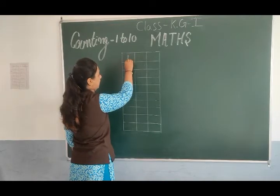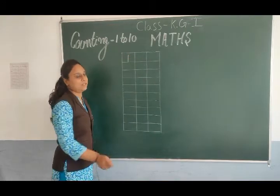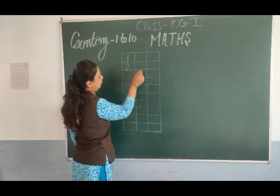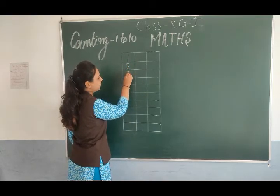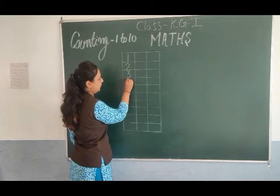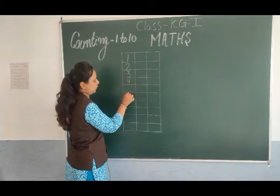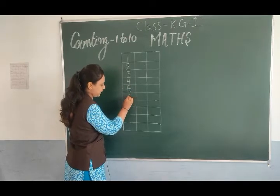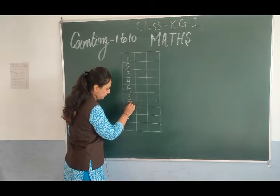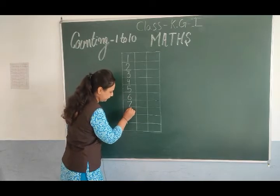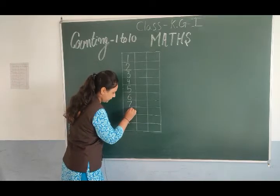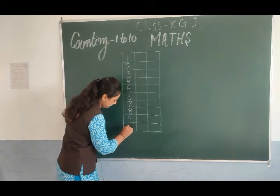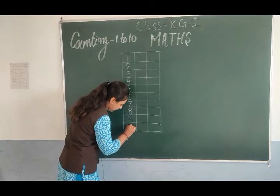1, straight line means 1, next 2, 3, 4, 5, 6, 7, 8, 9, and 10.